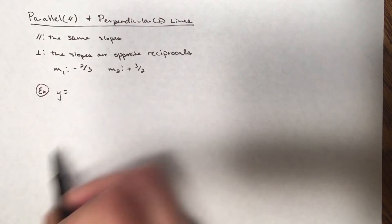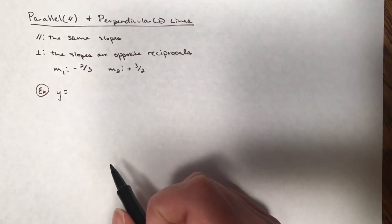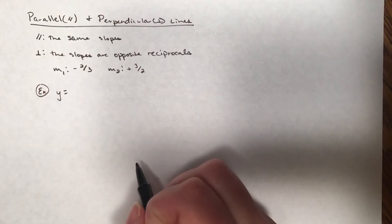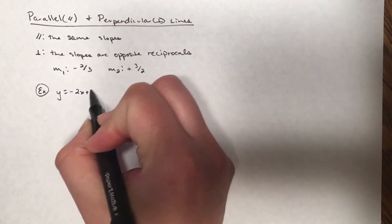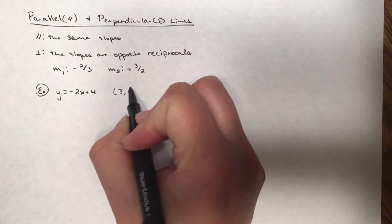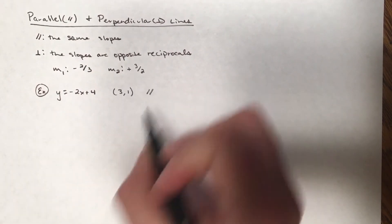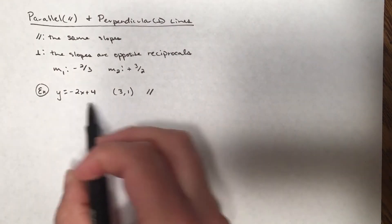You'll be asked to write an equation of a line that is either parallel or perpendicular and goes through a certain point. Let's say I have y equals negative 2x plus 4, and it needs to go through the point (3, 1), and we want it to be parallel.